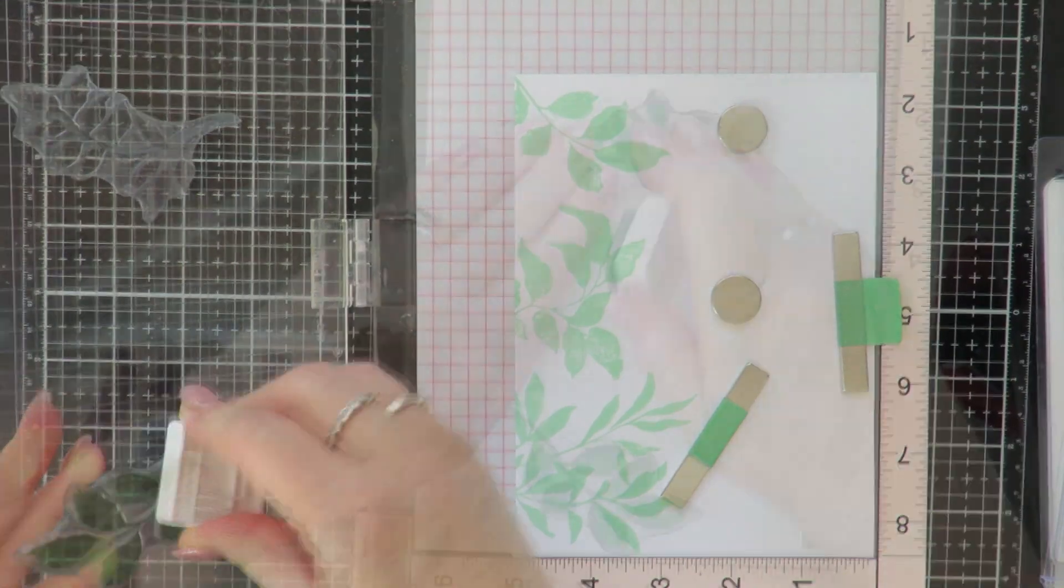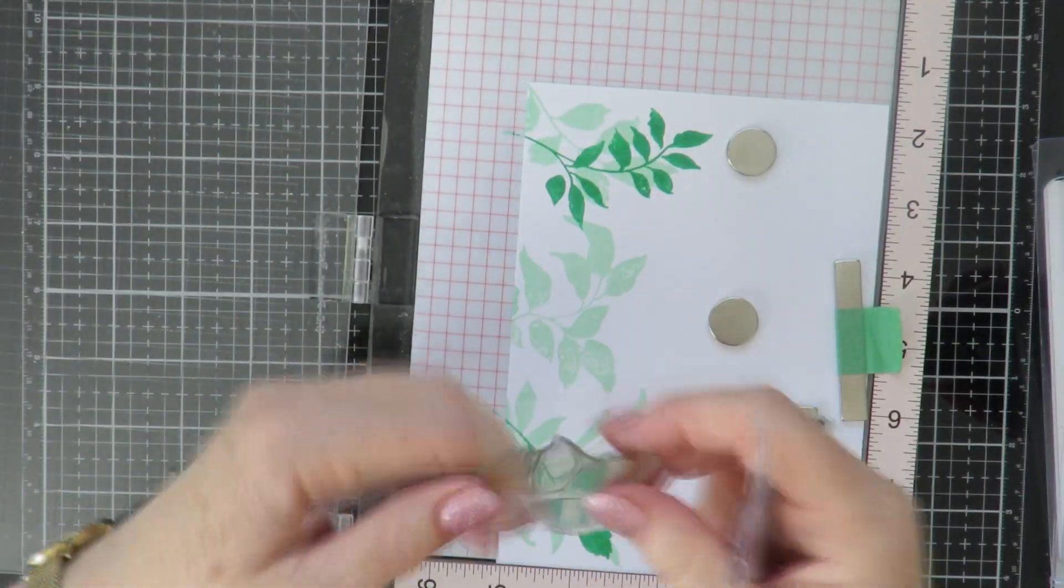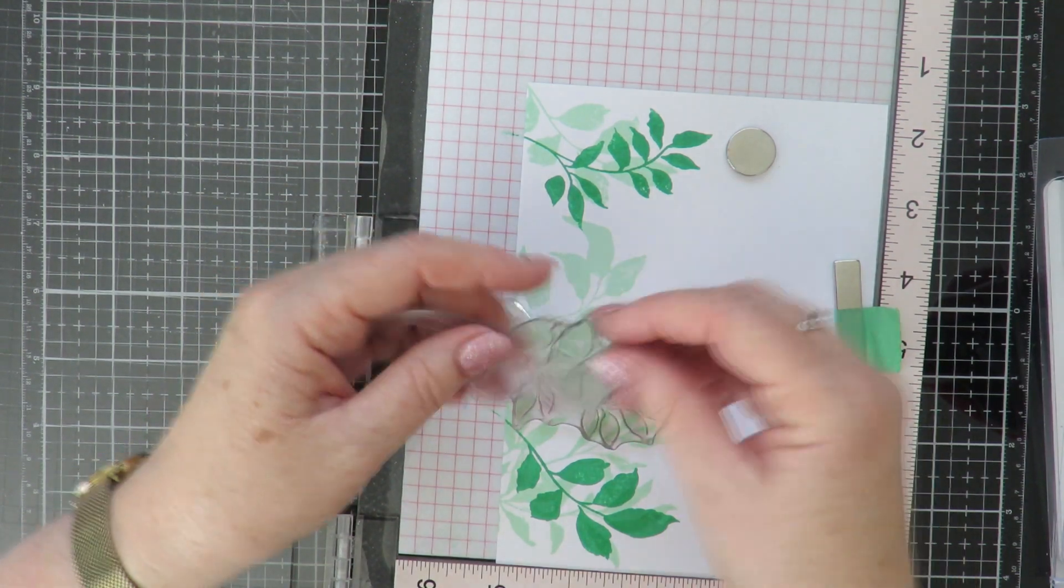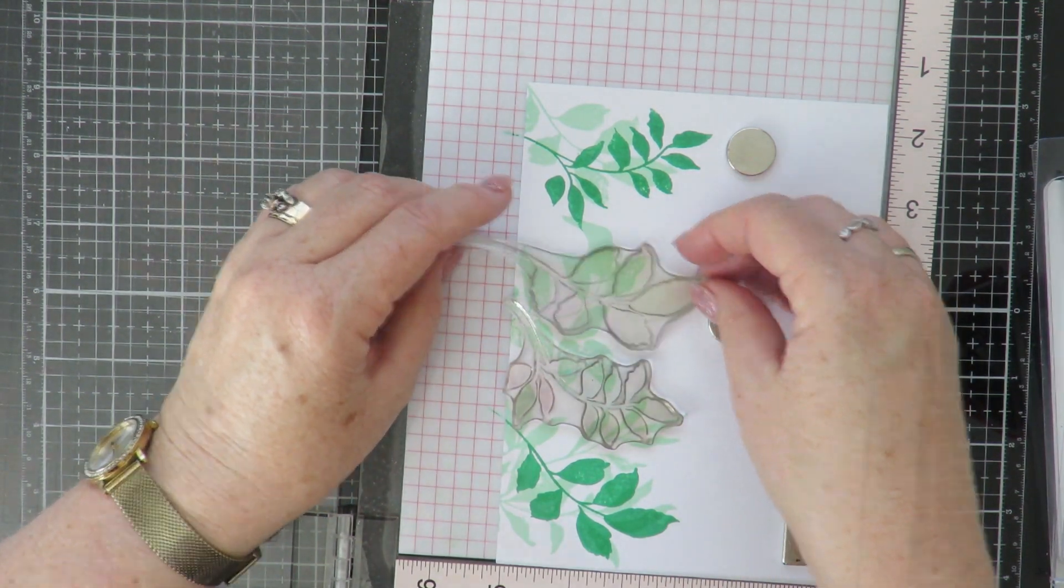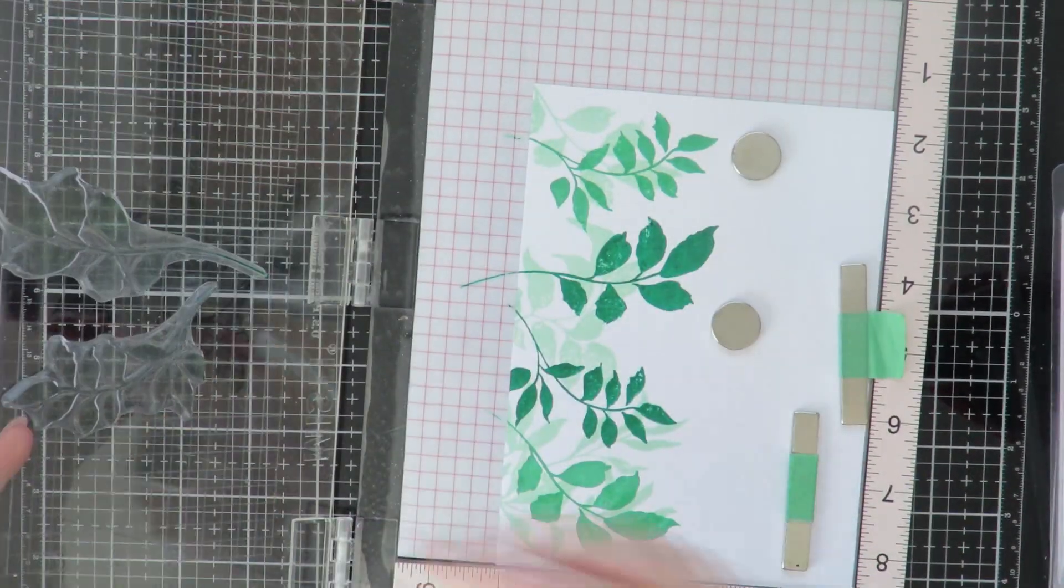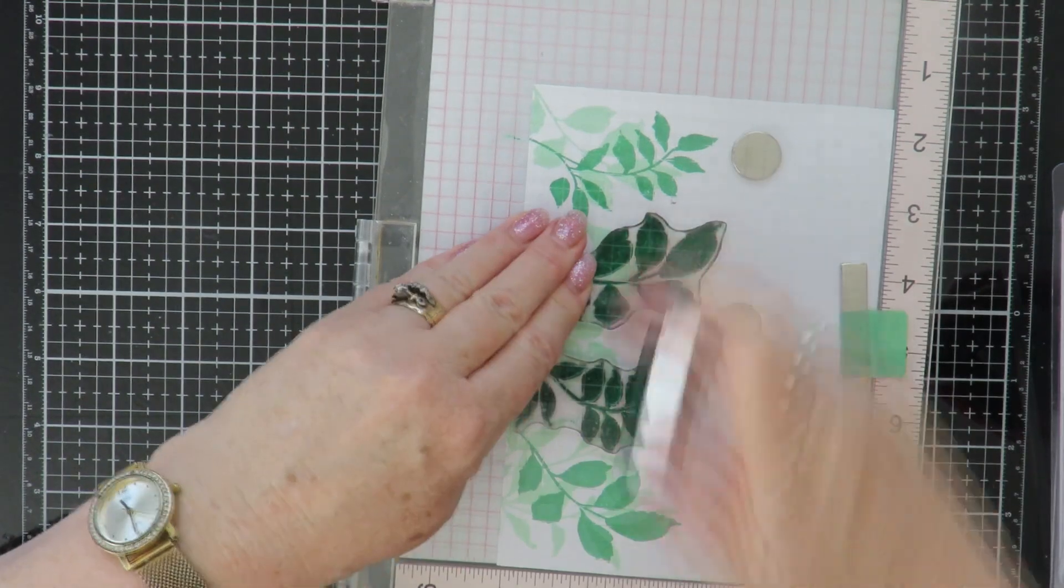So the second layer with the two sets of leaves, I'm going to use Meadow. And then while I've got that one in the MISTI, I'm going to just finish off and do the third layer of leaves which is going to be done with the Emerald City, and then that's that variation finished.